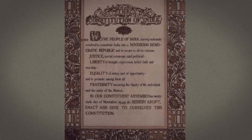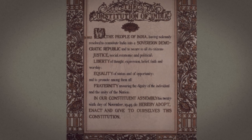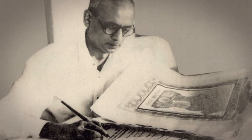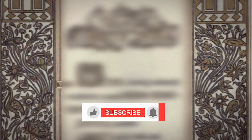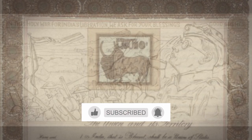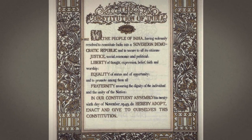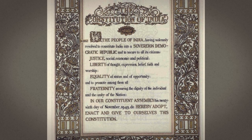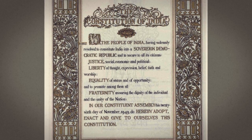It consisted of 1,17,369 words and was completely handwritten by calligraphist Prem Bihari Naren Raizada, and illustrated by a team led by artist Nandlal Bose. The illustrations are drawn from the history and legends of India, ranging from the Indus Valley Civilization period to scenes from the freedom struggle. This made sure that the Constitution reflected an India that was rooted in its past while also looking towards the future.